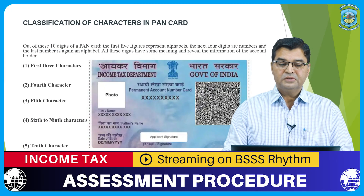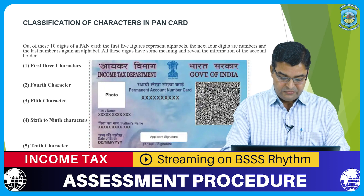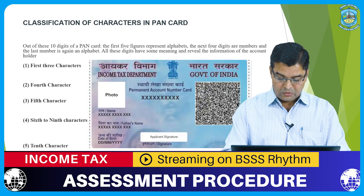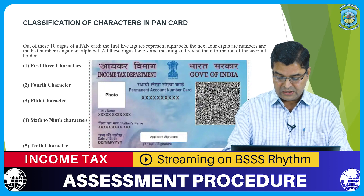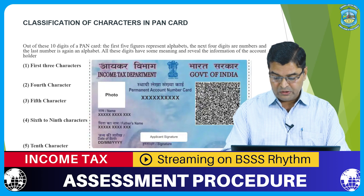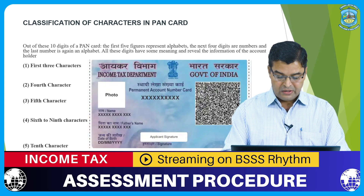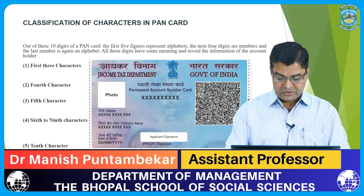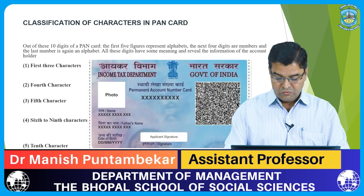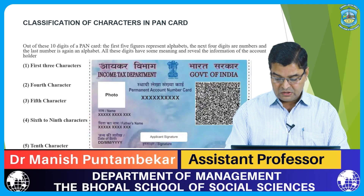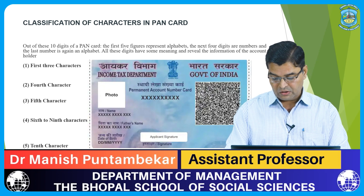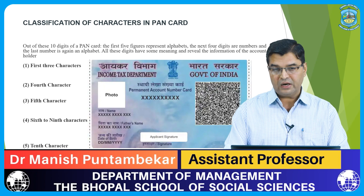First: the first 3 characters. The first 3 characters are a normal alphabetic series starting from A to Z. The Department of Income Tax allocates these digits randomly, as a combination of letters like AZT or ZRT.